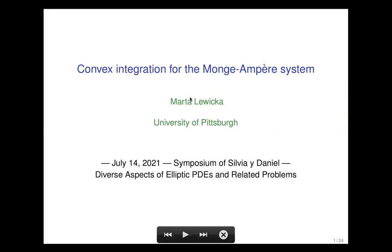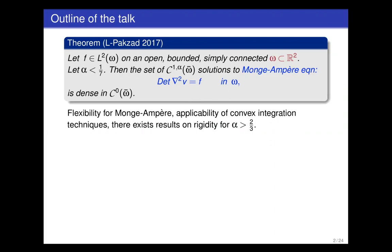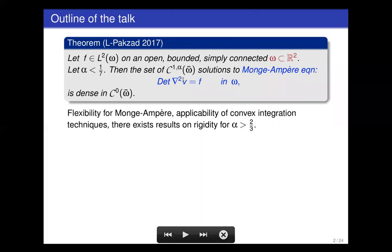This is the story behind my research in this direction. In 2017, together with Reza Pakzad, we proved the following result concerning the Monge-Ampère equation — so that we are all familiar with that PDE — the determinant Hessian of V, where V is the unknown function, equals the right-hand side given by F. The assumption here is that the situation is two-dimensional.